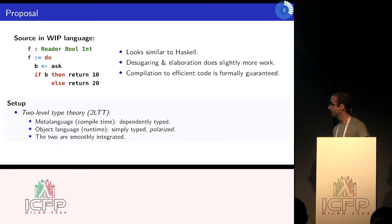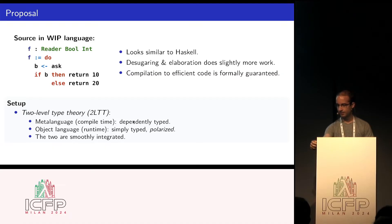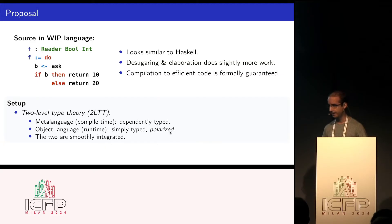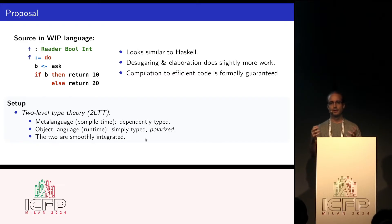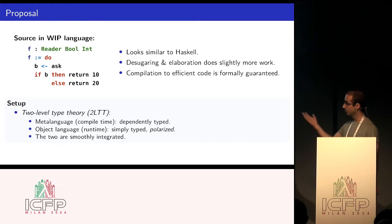So what's the setup? We have two-level type theory - this is a two-stage language. At compile time, we have a dependently typed language, which is very expressive. At runtime, we have a simply typed polarized language. The two are smoothly integrated. The general idea is that you can have as much abstraction at compile time as you want, because it's going to disappear anyway. At runtime, we don't have to optimize all these fancy dependent types and abstractions. The object language is much simpler and easier to compile, and it's also polarized, which has some additional benefits in code generation.